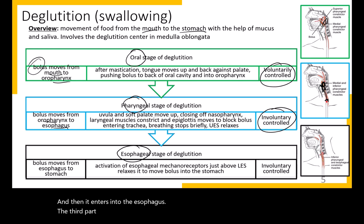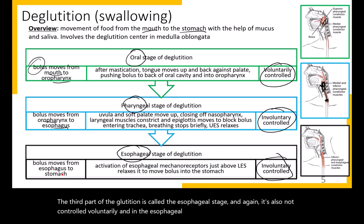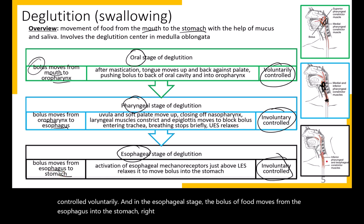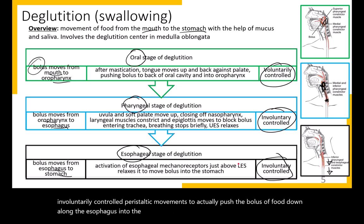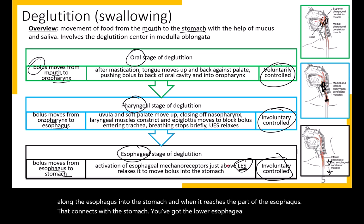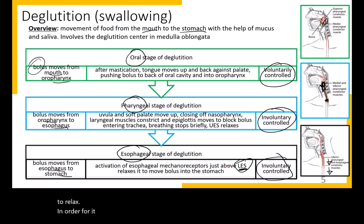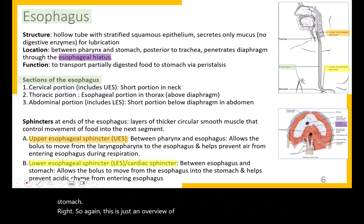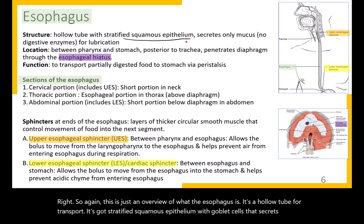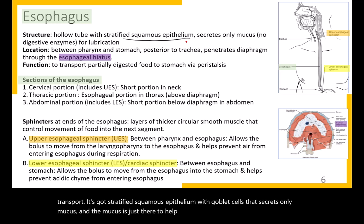The third part of deglutition is the esophageal stage, also not controlled voluntarily. The bolus moves from the esophagus into the stomach through a series of involuntary peristaltic movements. When it reaches the junction with the stomach, the lower esophageal sphincter relaxes to allow the bolus to move into the stomach. The esophagus is a hollow transport tube lined with stratified squamous epithelium with goblet cells that secrete mucus to lubricate the bolus as it moves down.